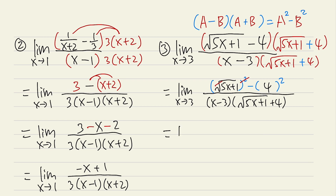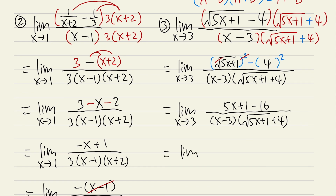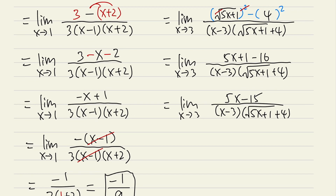So we have the limit as x approaching 3, with 5x plus 1 minus 16 on top, which simplifies to 5x minus 15. The bottom is x minus 3 times (square root of 5x plus 1 plus 4). We can factor out 5 from 5x minus 15 to get 5 times (x minus 3) on the top.